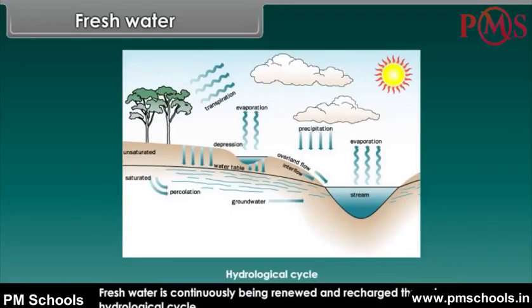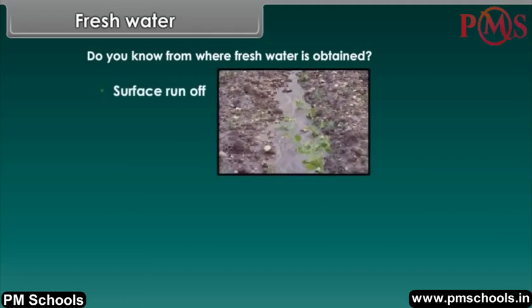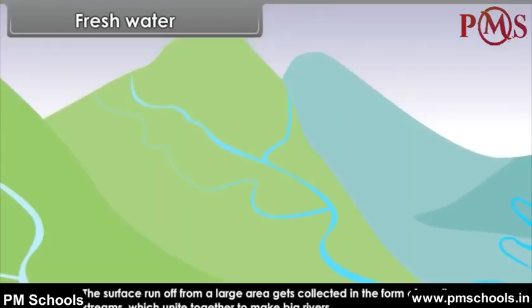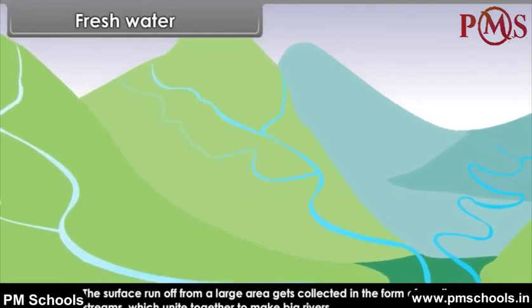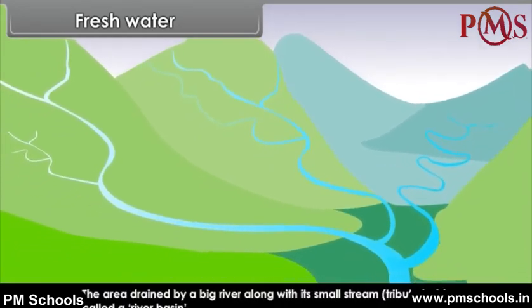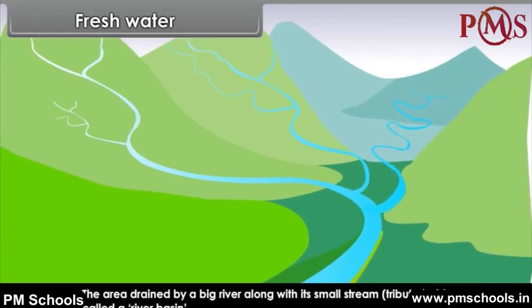Fresh water is continuously being renewed and recharged through the hydrological cycle. Fresh water is obtained from surface runoff and groundwater. Surface runoff is the overland flow of rainwater. The surface runoff from a large area gets collected in the form of small streams, which unite together to make big rivers. The area drained by a big river along with its small streams and tributaries is called a river basin.